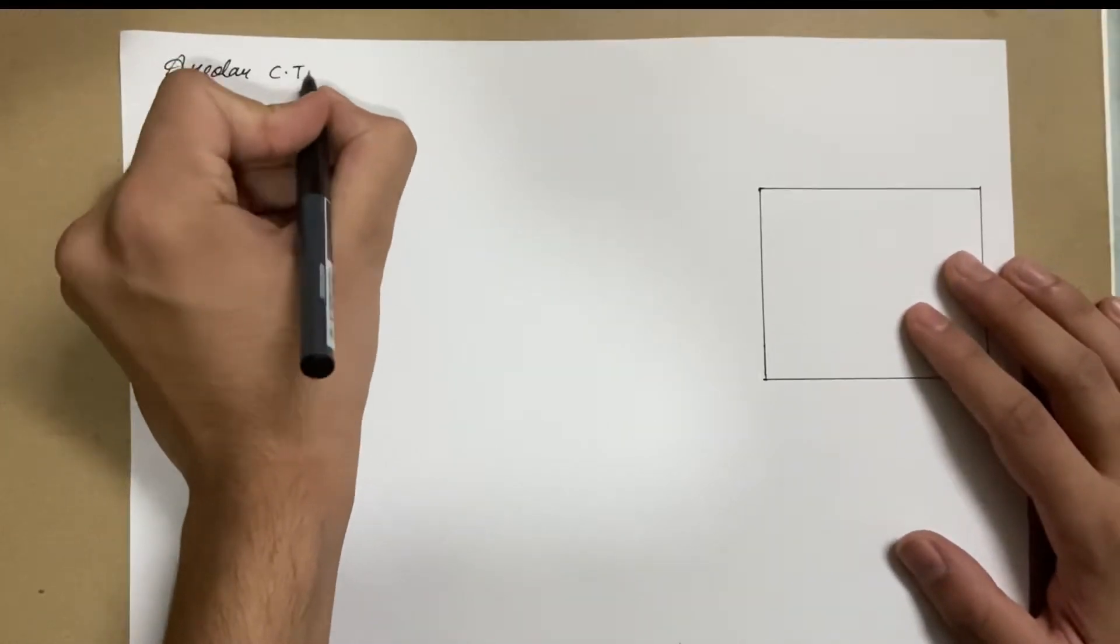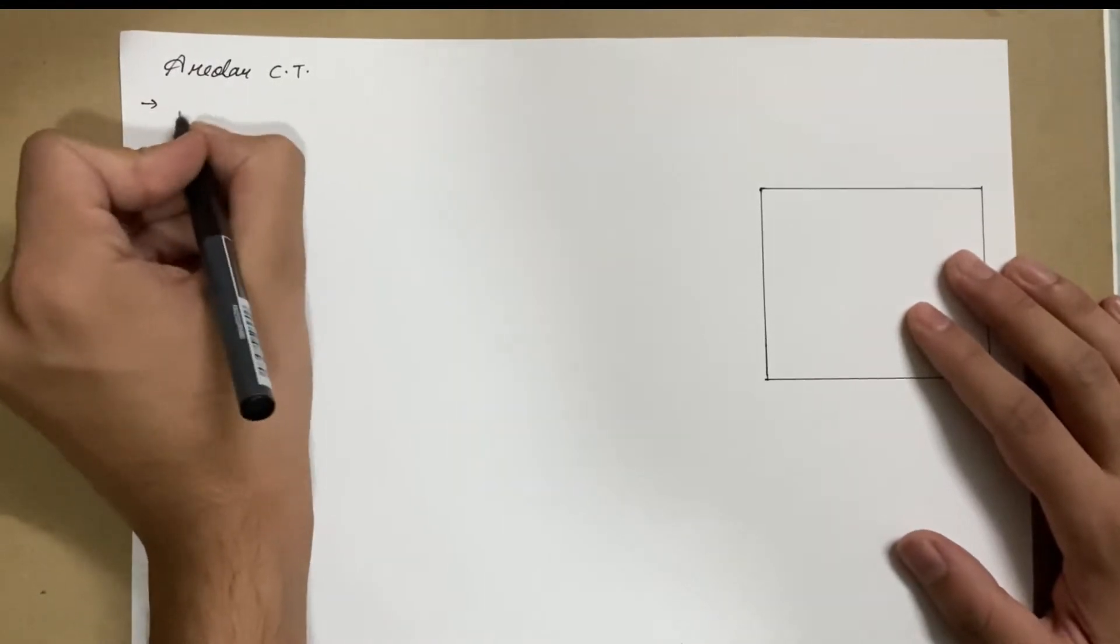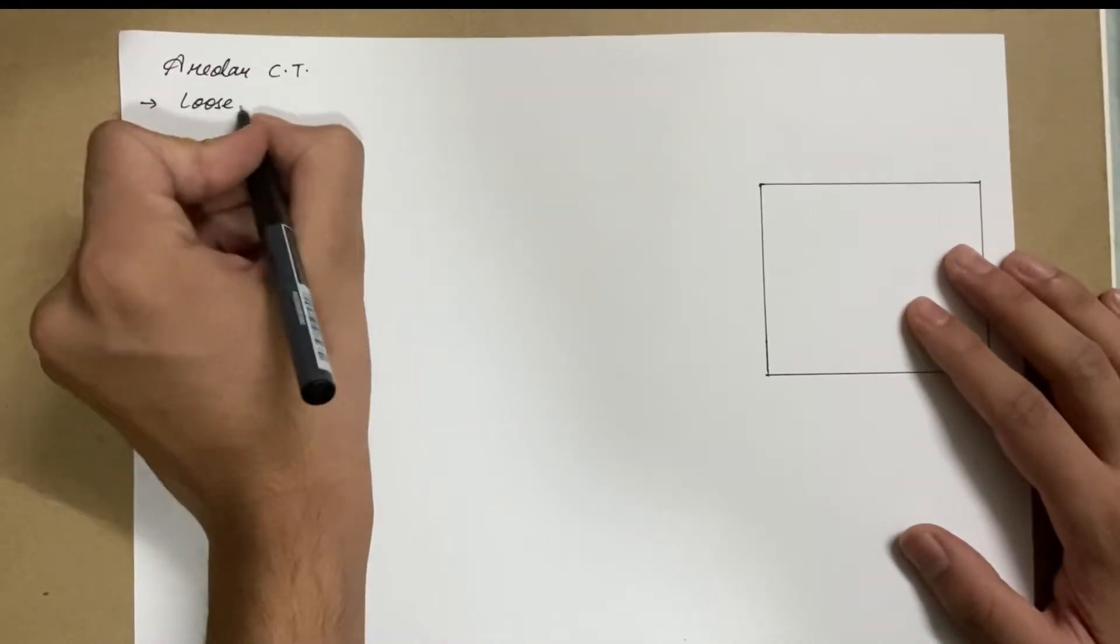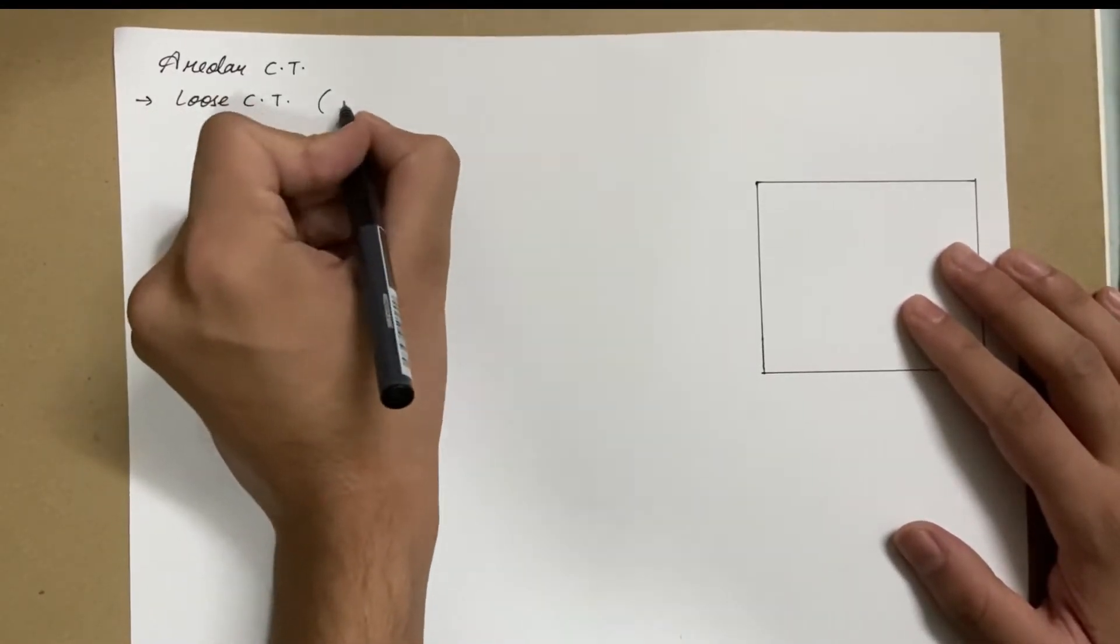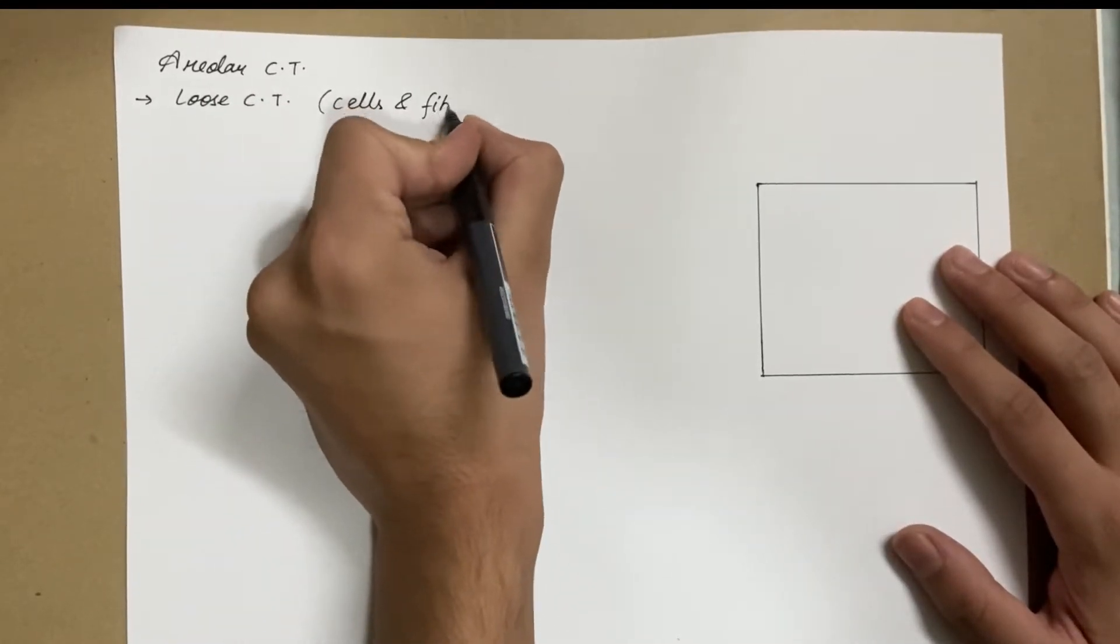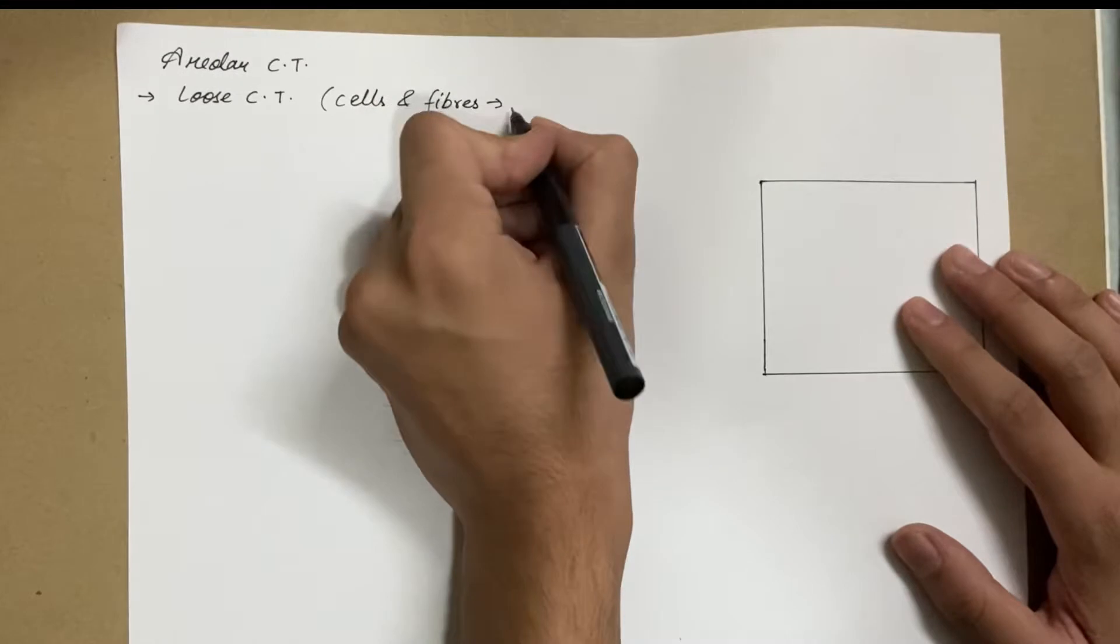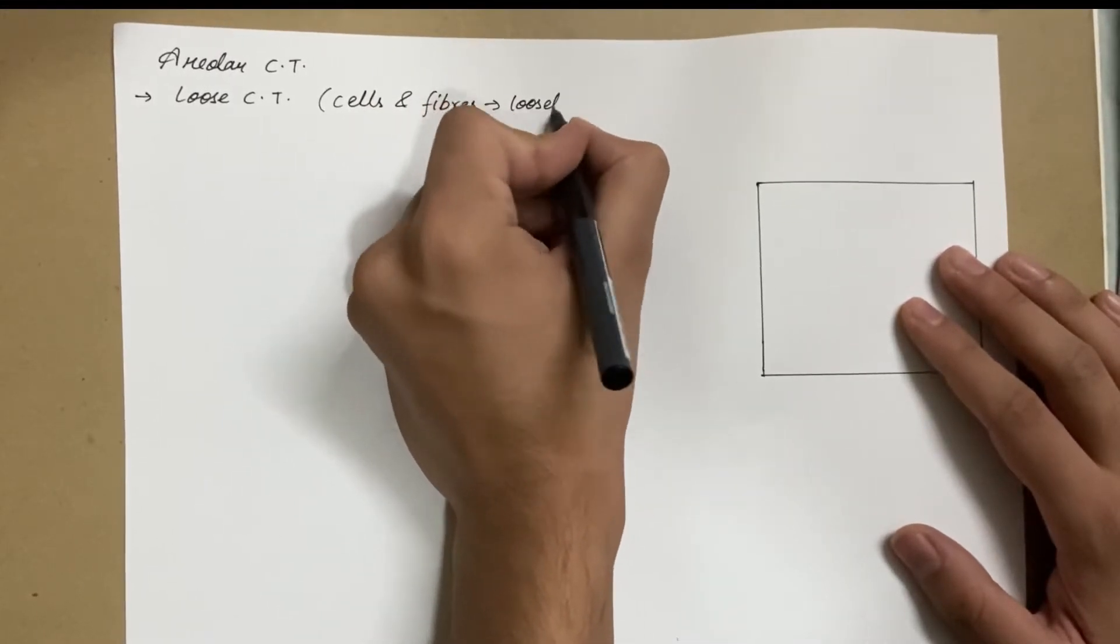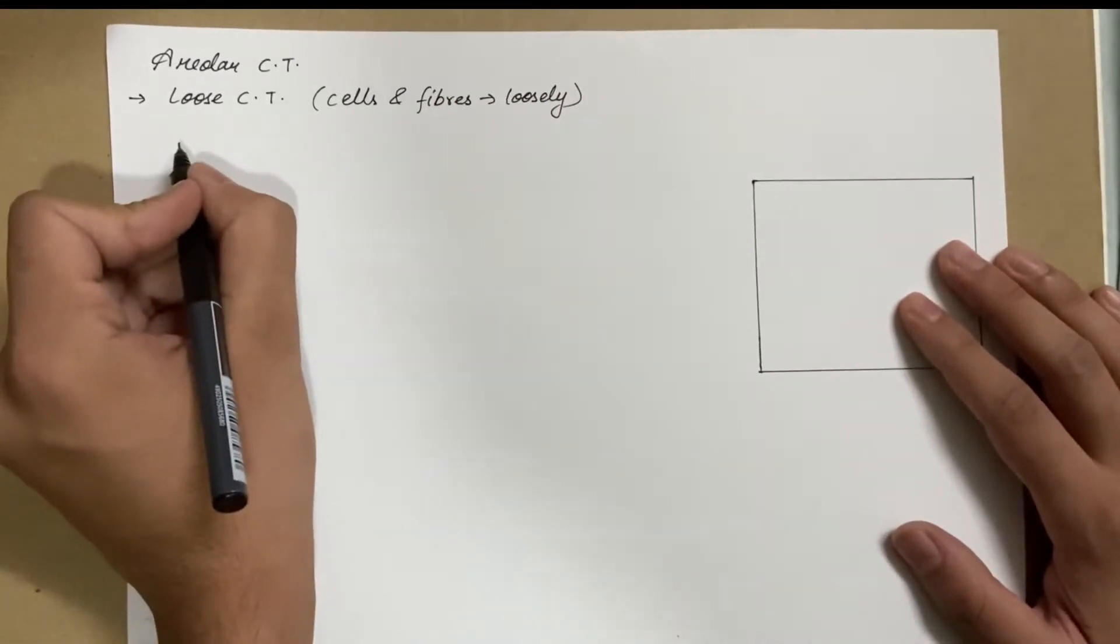Areolar connective tissue is a type of loose connective tissue. It's called so because the cells and fibers present in areolar connective tissue are loosely arranged.